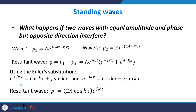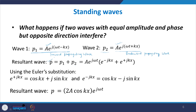Let us say wave 1 has pressure p₁ = A · e^(j(ωt − kx)) and wave 2 has pressure p₂ = A · e^(j(ωt + kx)). Both have the same amplitude and no phase difference — one is a forward propagating wave and one is a backward propagating wave. The resultant pressure is the sum of these two waves: A · e^(jωt) times [e^(−jkx) + e^(+jkx)].